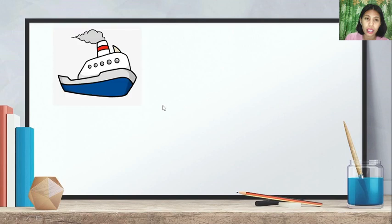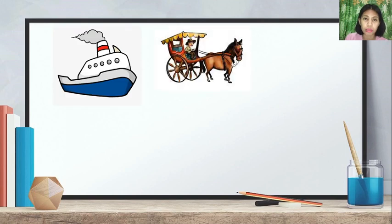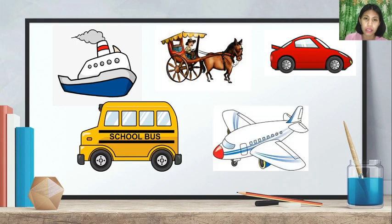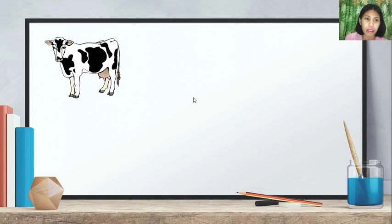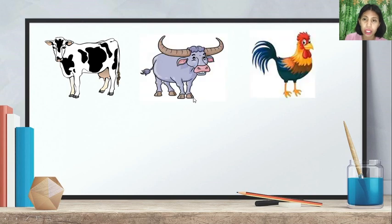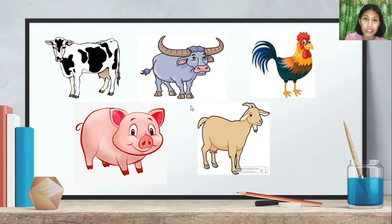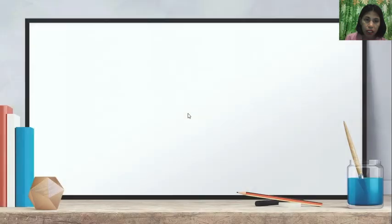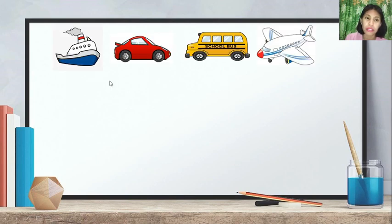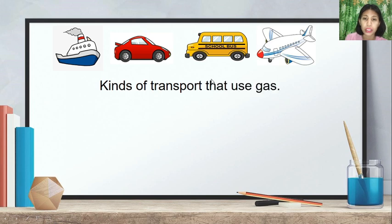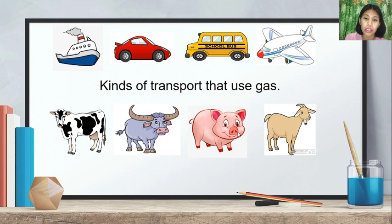Let's take a look at these pictures. Which one is different? We have the calesa, cow, carabao, rooster, pig, and goat. The answer is the rooster. In the first set, we have kinds of transport — car, bus, and plane — which share a common characteristic. The cow, carabao, pig, and goat are farm animals with four legs. These four animals share common characteristics.